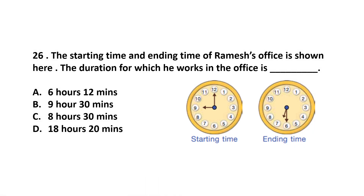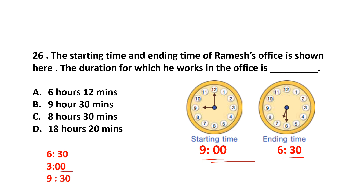Question number 26. The starting time and ending time of Remy's office is shown. The duration for which he works is? The starting time is 9 o'clock and ending time is 6:30. From 9 to 12 is 3 hours, and from 12 to 6:30 is 6 hours 30 minutes. So total duration is 3 hours plus 6 hours 30 minutes = 9 hours 30 minutes. The answer is option B.